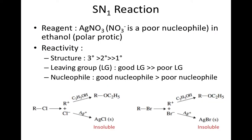In this experiment, the reagent for the SN1 reaction is silver nitrate in ethanol. This reagent is ideal for SN1 reaction because nitrate is a poor nucleophile, so there is little chance for the SN2 reaction to occur, where a good nucleophile is necessary. The solvent, ethanol, is a polar protic solvent. In the reaction, the alkyl halides form a carbocation. Since nitrate is a poor nucleophile, ethanol acts as the nucleophile, attacking the carbocation to yield an ether as the product. The byproduct is the formation of silver halide, which is insoluble in ethanol and precipitates as a white solid. Therefore, if the alkyl halide reacts under this condition, a white precipitate byproduct should be formed.